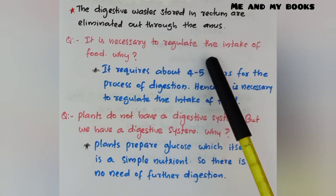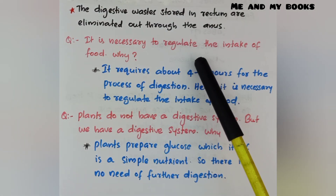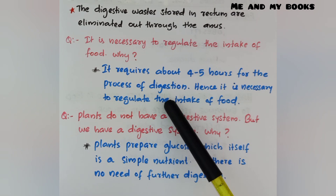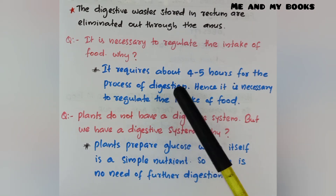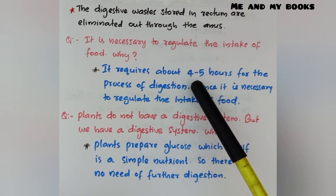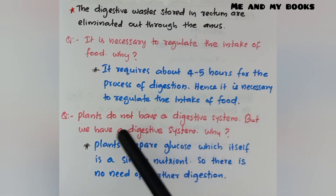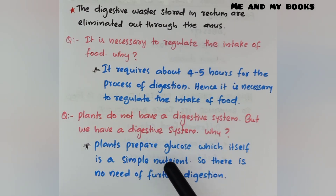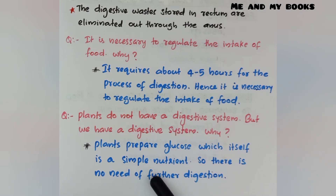It is necessary to regulate the intake of food because it requires about four to five hours for the process of digestion, so we should eat food after a gap of four to five hours. Plants do not have a digestive system because they prepare glucose, which itself is a simple nutrient requiring no further digestion.